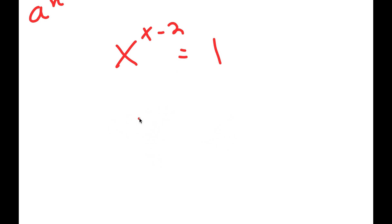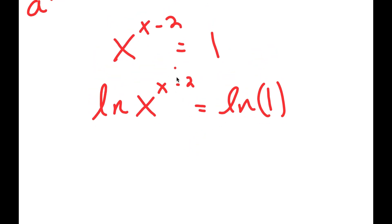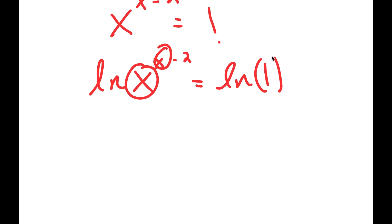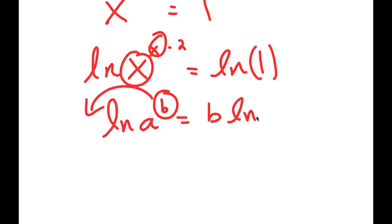From here, what I can do is take the ln or natural log on both sides. So I get ln of x to the power of x minus 2 is equal to ln of 1. The reason I did this is because we have x as a normal term as well as an exponent, so we want to get this exponent down to be a regular term. If I have something in the form ln of a to the power of b, I can move b to the front.